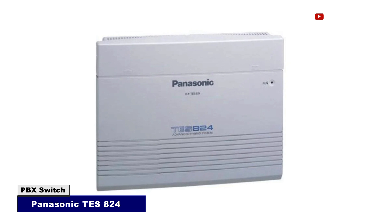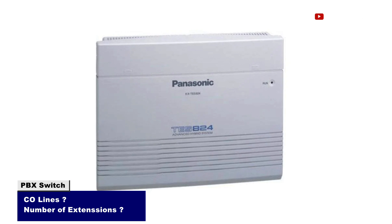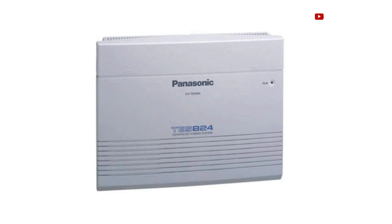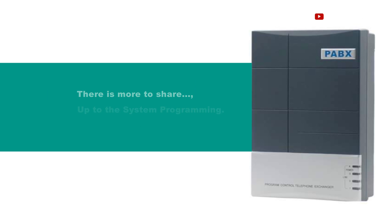You can find a Panasonic machine labeled as TS-824. What in your opinion could be the capacity of such a PBS machine — specifically the CO lines and the number of extensions it can take? Let me hear from you in the comments section; I will be expecting your answer. There is more to share on PBS installation up to the system programming. It's been a pleasure, see you in the next video.